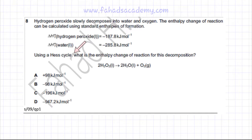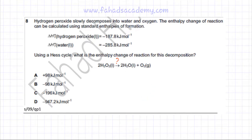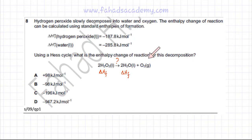Using a Hess cycle, we need to find the enthalpy change of reaction for this decomposition. This is the reaction provided, and the enthalpy change is unknown — that is what needs to be calculated. The enthalpy of formation of H₂O₂ and H₂O are both given. The enthalpy of formation of oxygen, which is an element, is always zero.